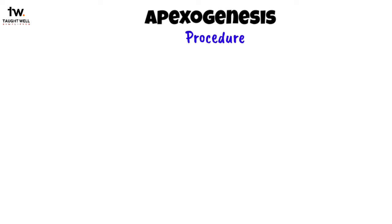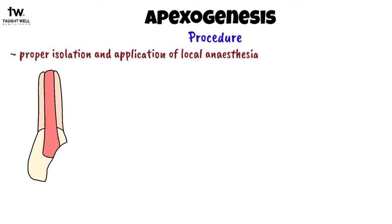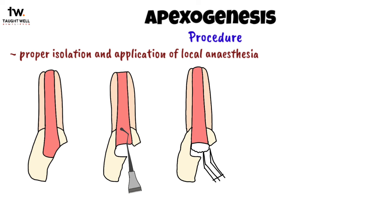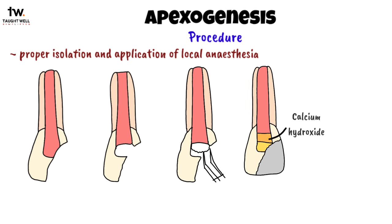Now let's see how the procedure is done. The steps are similar to a pulpotomy. The first step is proper isolation and application of local anesthesia. Then all the carious tooth structure is removed and access to the pulp chamber is made. The coronal pulp is removed with the use of excavators, and we should make sure that we do not damage the radicular pulp during this step. Then we place a moist cotton pellet over the pulp stumps to control bleeding.